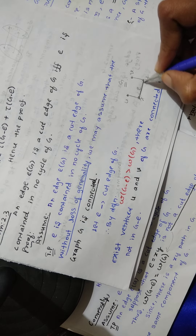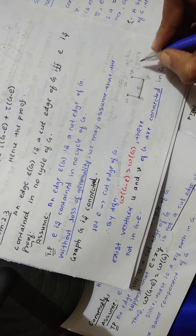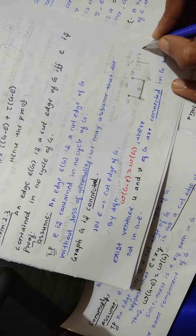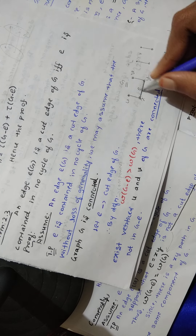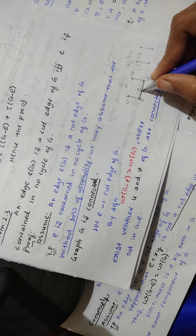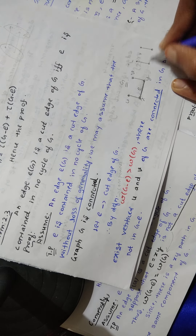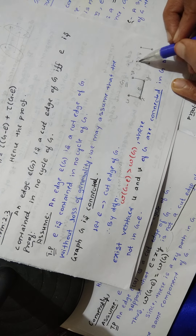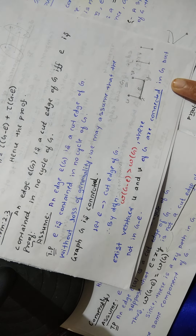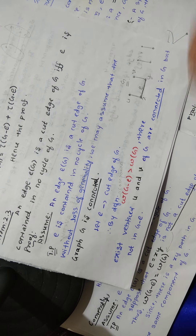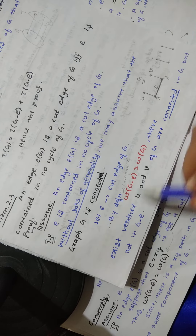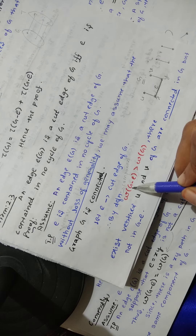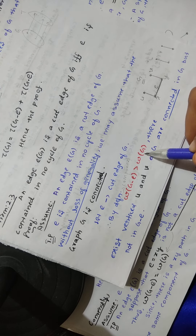If you want to say E is a cut edge, then if I eliminate this edge E from this graph, I will get a graph like this. In this graph, the edge is eliminated, so now there is no edge there and the graph becomes disconnected. That is what is meant by a cut edge of G.